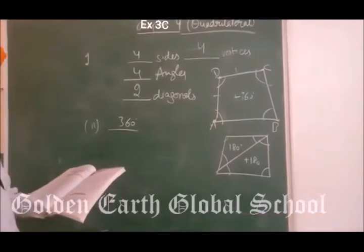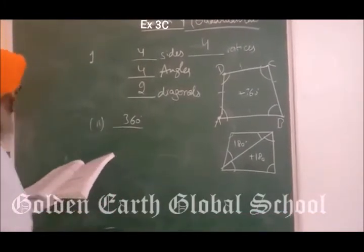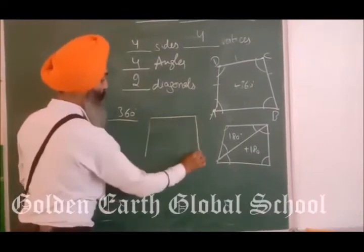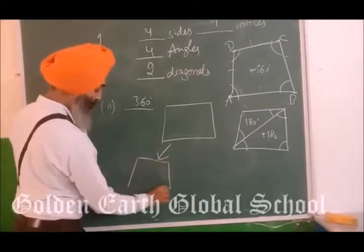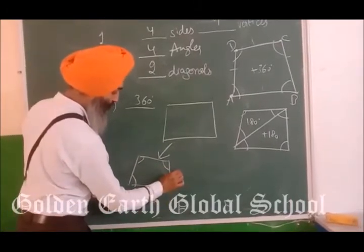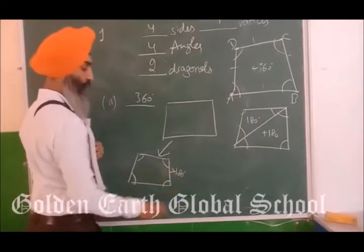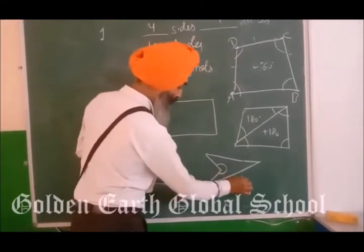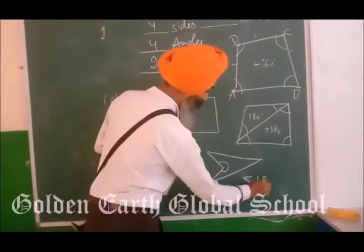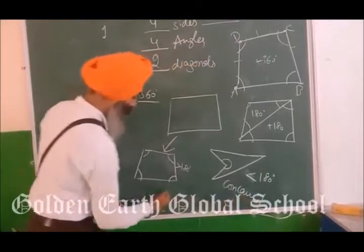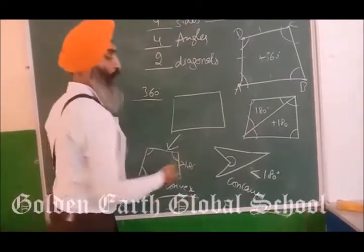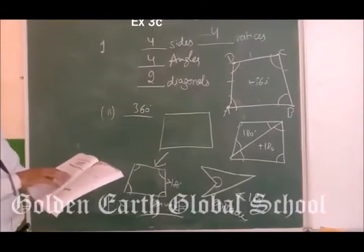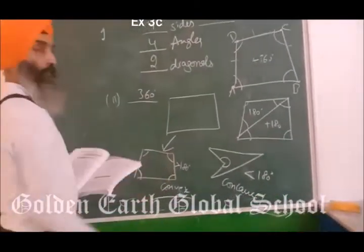The third fill-up: the measure of each angle of a convex quadrilateral is dash than 180. A quadrilateral has two types. In a convex quadrilateral, each angle is less than 180 degrees. A quadrilateral having one angle greater than 180 degrees is called a concave quadrilateral. So the answer is: in a convex quadrilateral, each angle is less than 180 degrees.